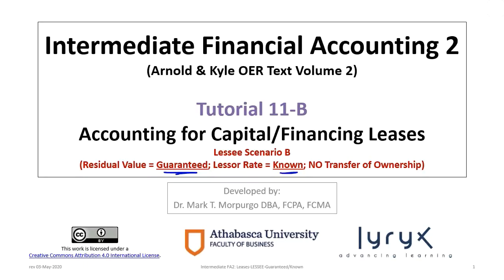Hello and welcome to Intermediate Financial Accounting 2 Tutorial 11b. This is the second tutorial in a series related to accounting for capital or financing leases. This tutorial is focused on accounting from the lessee perspective, dealing with Scenario B, where we have a situation with a guaranteed residual and where the lessor's implicit rate is known to the lessee. This is a slightly different scenario than the previous one in Tutorial 11a.